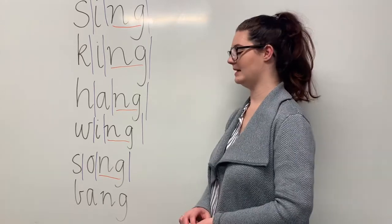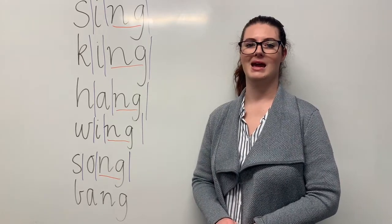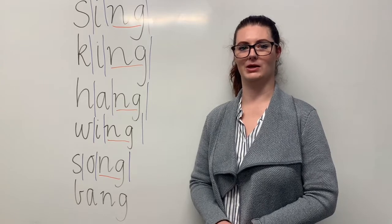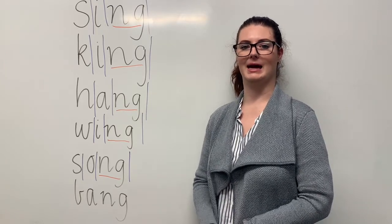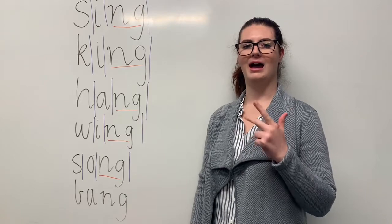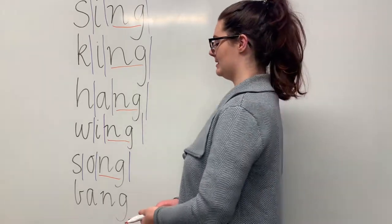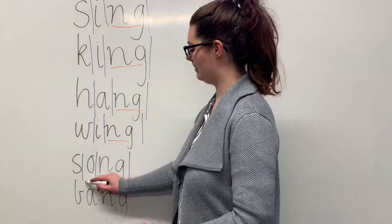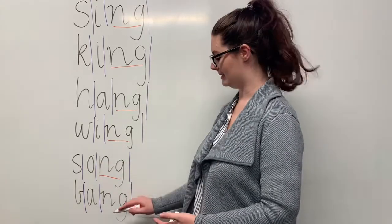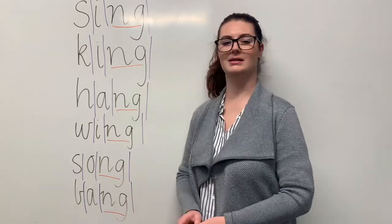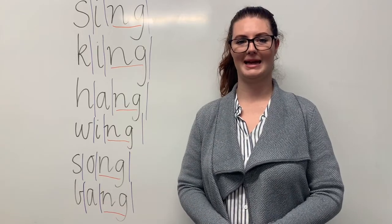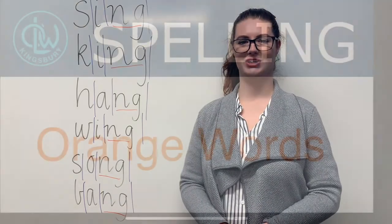And our final red word is bang. Say bang. If you bang saucepan lids together, it makes a loud noise. The sounds in bang are together: b-a-n. The letters in bang are b-a-n-g. The part that we need to remember is the NG diagraph making the N sound. Can you teach it to me? Bang. B-a-n-g.